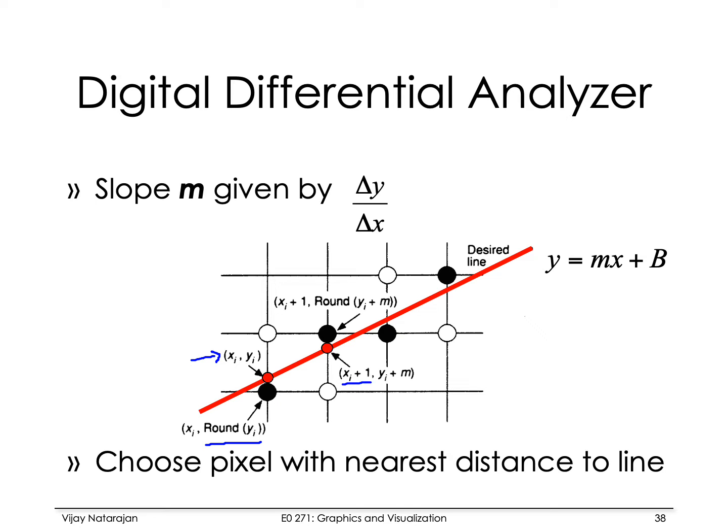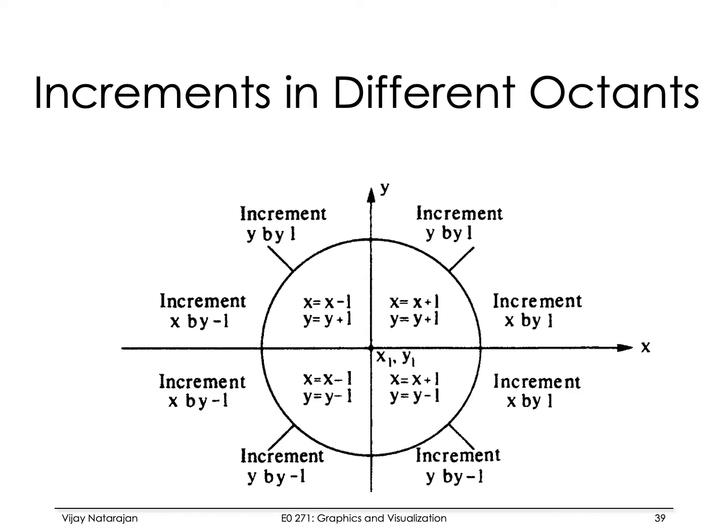Depending on the slope of the line, you may choose to use either the x-axis or the y-axis to compute points of intersection. For example, if you are in the first quadrant below the x=y line, you would increment x by one and compute the corresponding y values. If you are in the next sector of the first quadrant, you may want to increment y and compute the corresponding x-intercepts. This is a minor variant of the DDA algorithm.